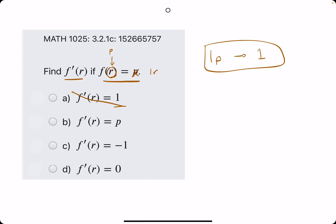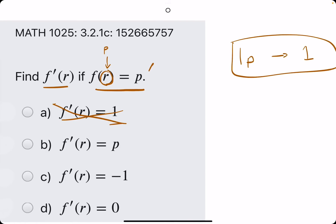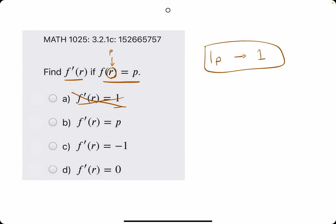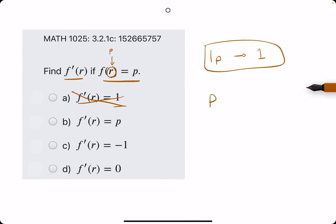However, we don't see 1r, we see 1p. So in this case, since we don't see an r in here, then p is just representing a constant because p is not our independent variable. It's not our input variable. So the derivative of any constant is just 0.